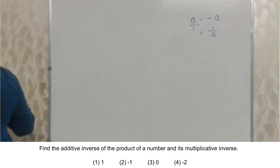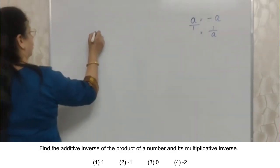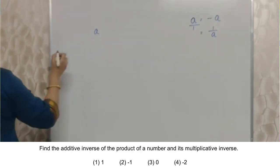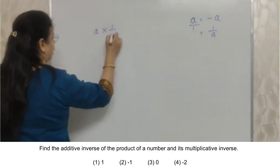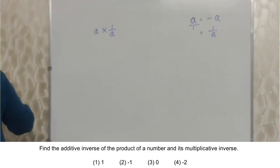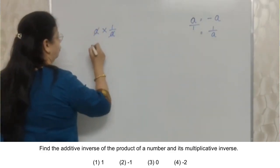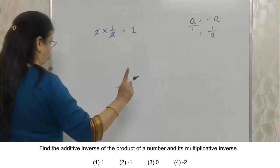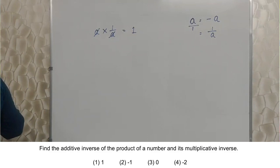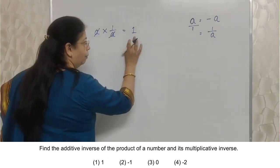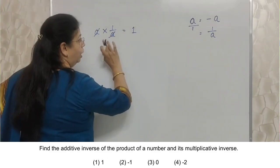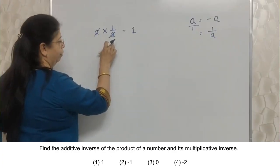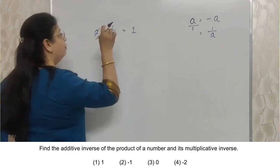Now we are supposed to read the sum properly. Kya puchha hai? Find the additive inverse. Kiska additive inverse? The product of the number. Number is A. And its multiplicative inverse. Iska product. Product means multiplication. Multiplicative inverse is 1 upon A. So obviously, this A will go with this. And the value is 1. 1 will be there as one of the option. But this is not what we are asking. The sum is not complete here. They are not asking what is the product of the number and its multiplicative inverse. They are asking what is the additive inverse of this product.